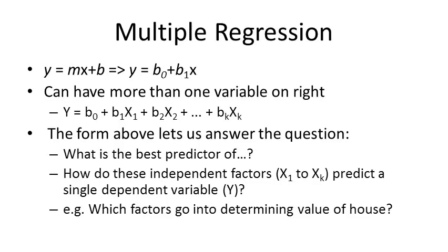Next is the extension to multiple regressions. Instead of y equals mx plus b, we can think of it as y equals b0 plus b1 times x, where b0 is the intercept and b1 is the coefficient for x. This can be further extended to have more than one variable predicting y: y equals b0 plus b1*x1 and so on, giving us k independent variables on the right as predictors for the response variable y.